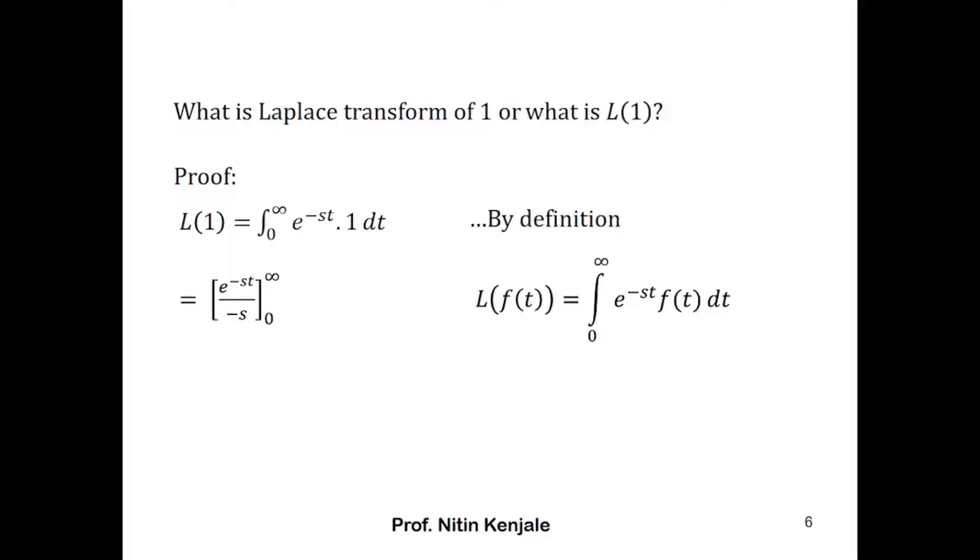1 over minus s is constant term here you can take it out. When you substitute infinity in t we have e raised to minus infinity which is 0. When you put 0 in t we will have e raised to 0 which is 1. Simplifying this we have 1 over s.